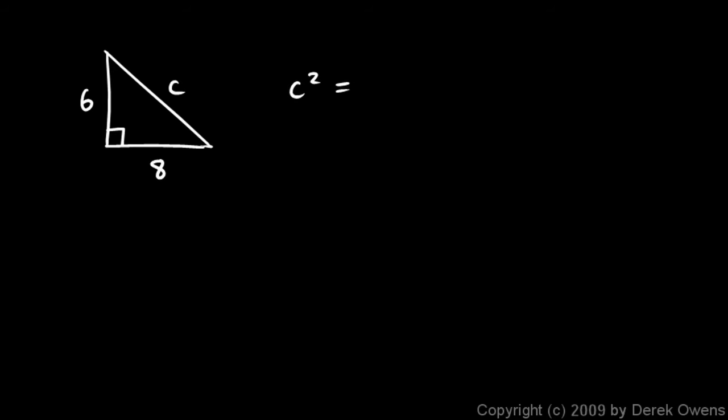Well again, c squared will be a squared plus b squared. And a in this case, we can call a 6, and b 8, it doesn't matter. If one of these were a and one of these were b, or the other way around. But I'll say 6 squared plus 8 squared, and 6 squared is 36, 8 squared is 64, and 36 and 64 add up to 100, which is a perfect square. If c squared equals 100, then c has to be the square root of 100, so c is 10.